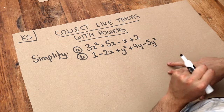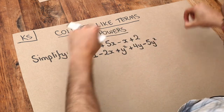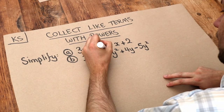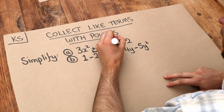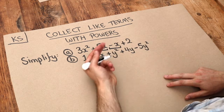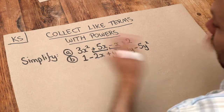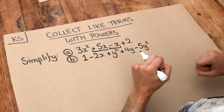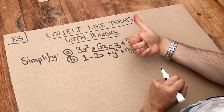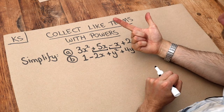We saw that if two terms were like terms, they involved the same variables and it meant we could combine them together into a single term. For example, if we had plus 5x and minus one lot of x, 5x minus one lot of x would be 4x. Now you might wonder if we can combine it with 3x squared because that involves x as well. But basically, two terms are only like terms if A, they involve the same variables, and B, they also involve the same powers.